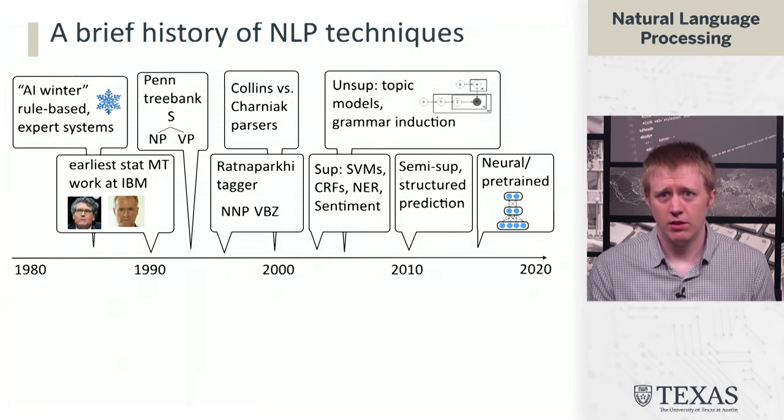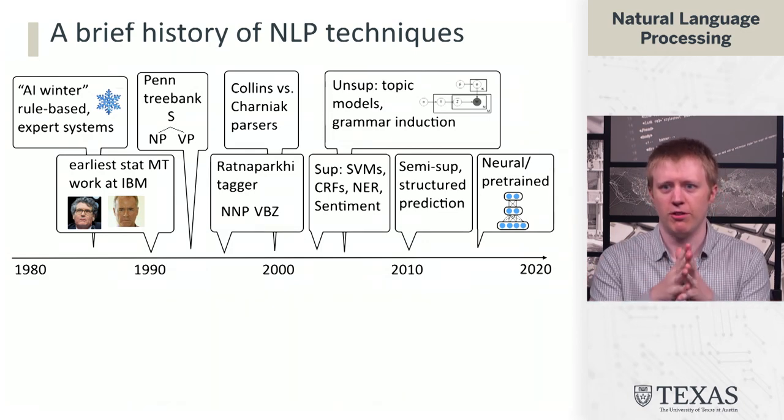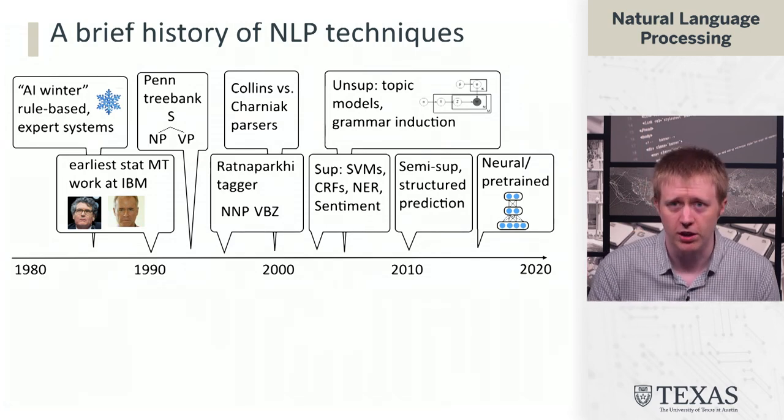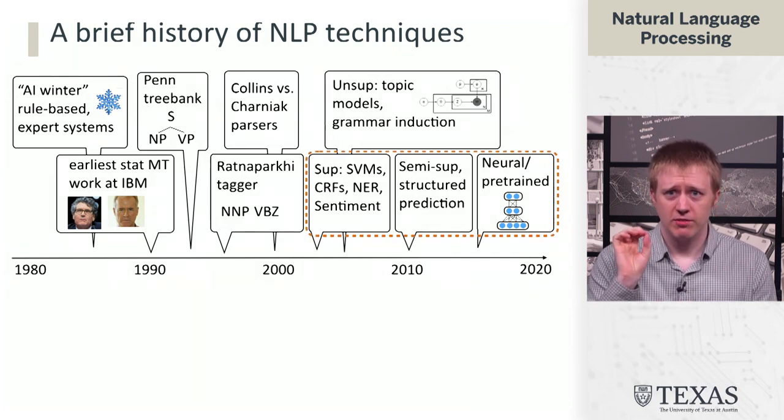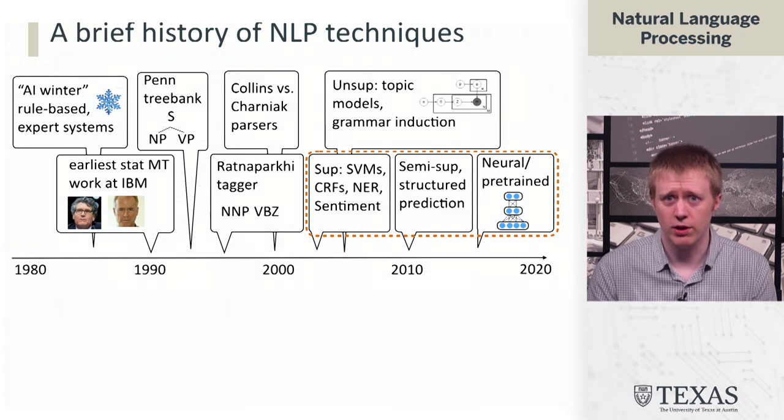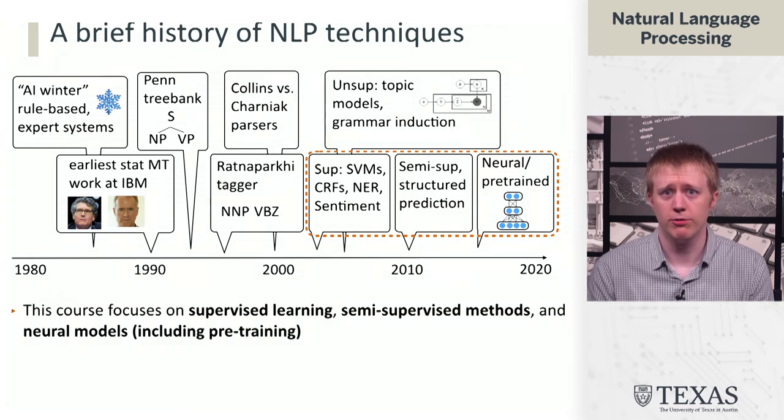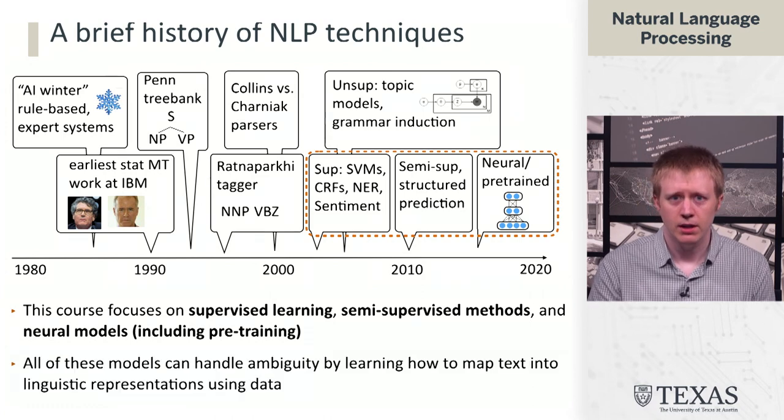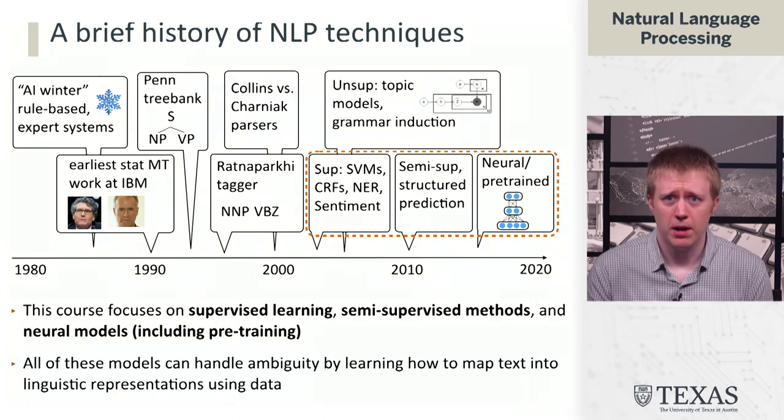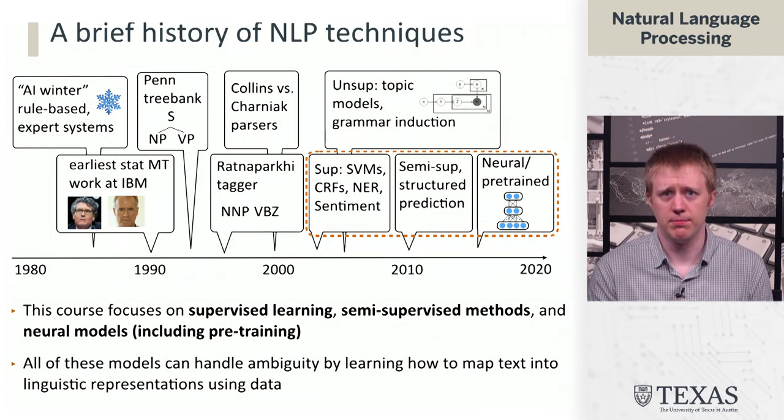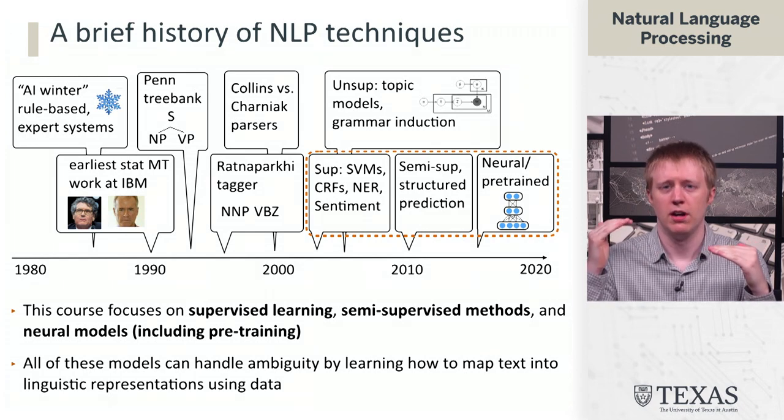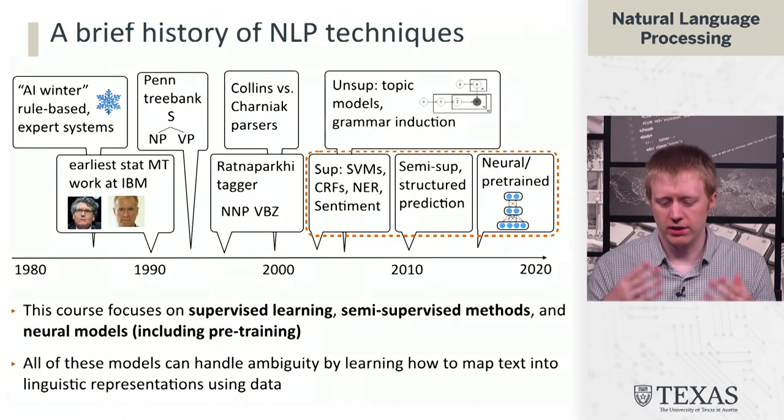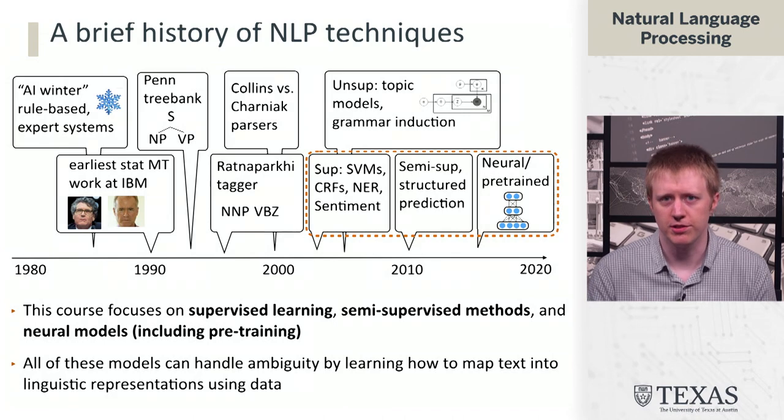Those models are great at this task of harnessing all the data on the web, as well as whatever supervised corpus you have for the task that you want to solve. What's here in this box is the techniques that are going to be the focus of this course. We are going to focus on supervised learning, semi-supervised methods, and neural network models. The common thread of all these models is that they are going to be able to handle ambiguity by learning how to map from input text to linguistic representations using data. That's going to allow us to start to tackle these issues that we saw on the previous few slides.